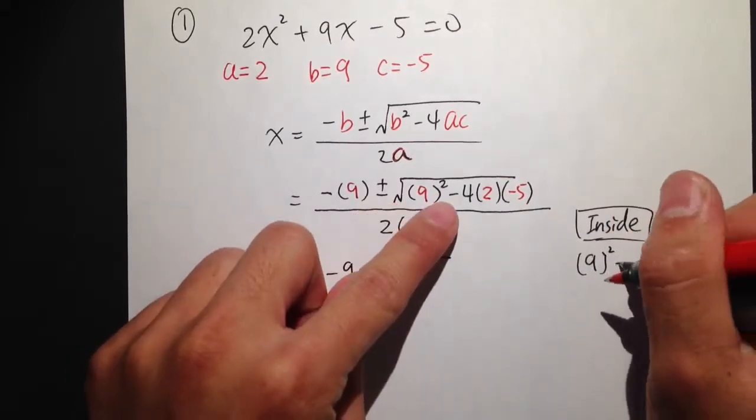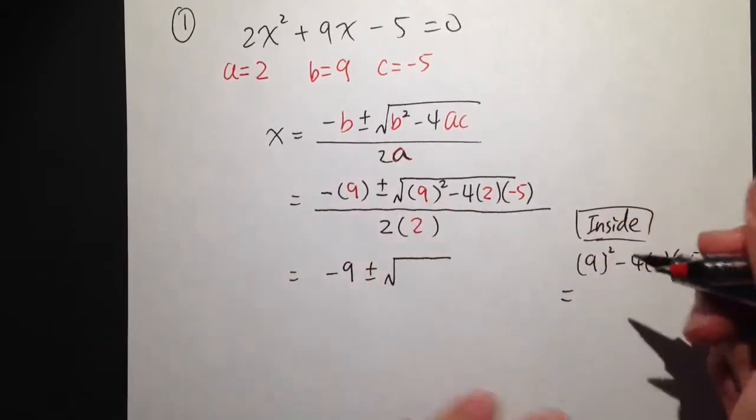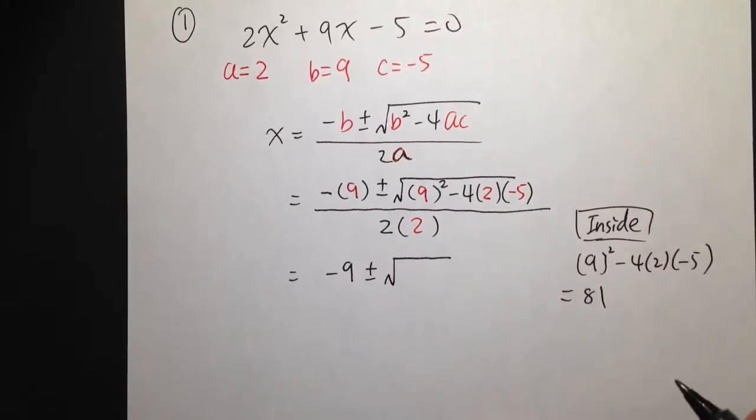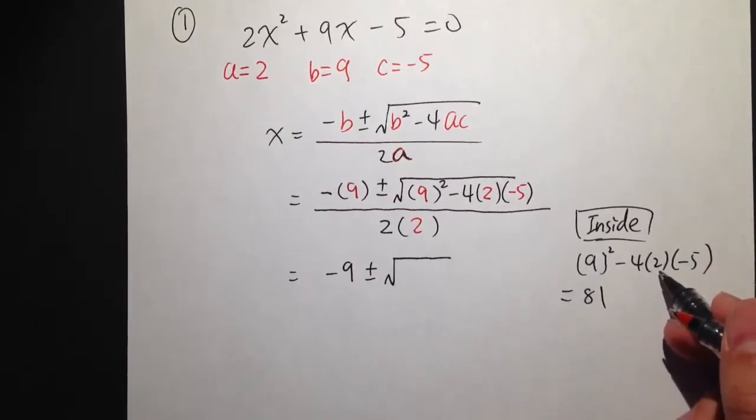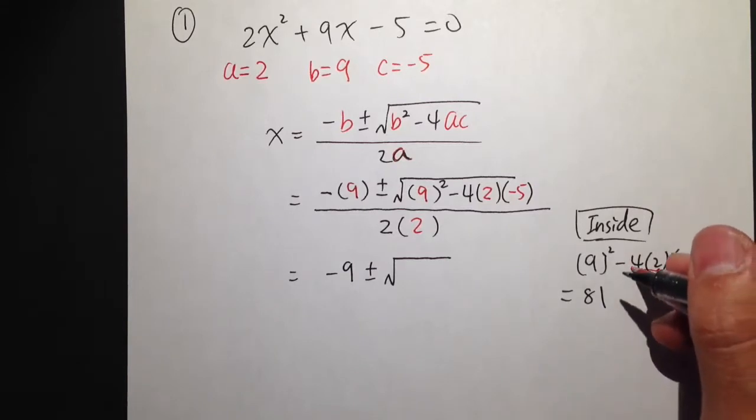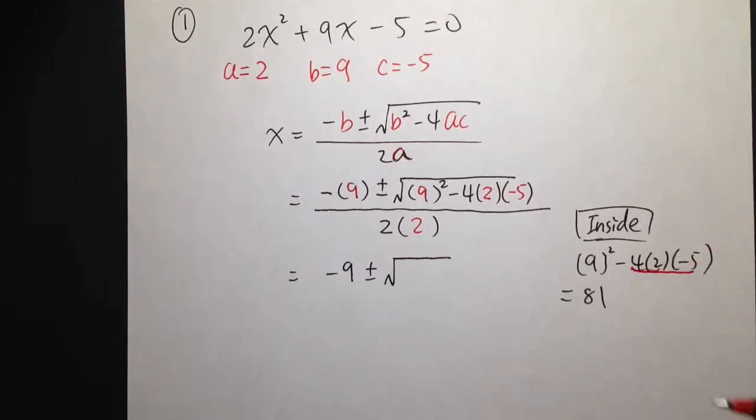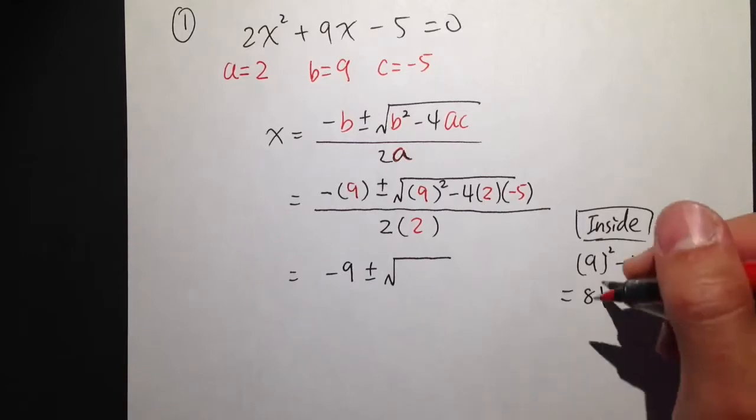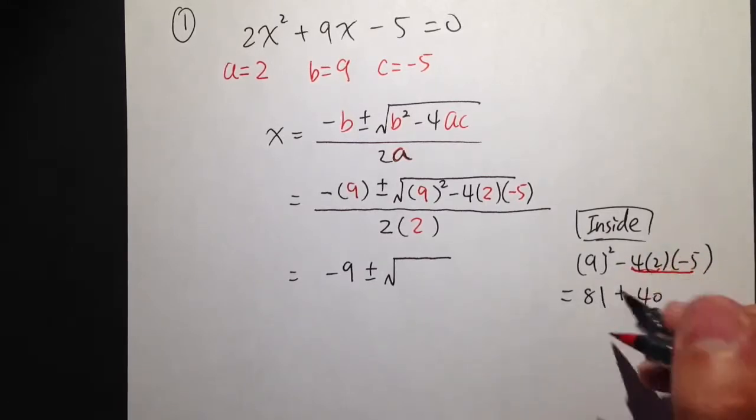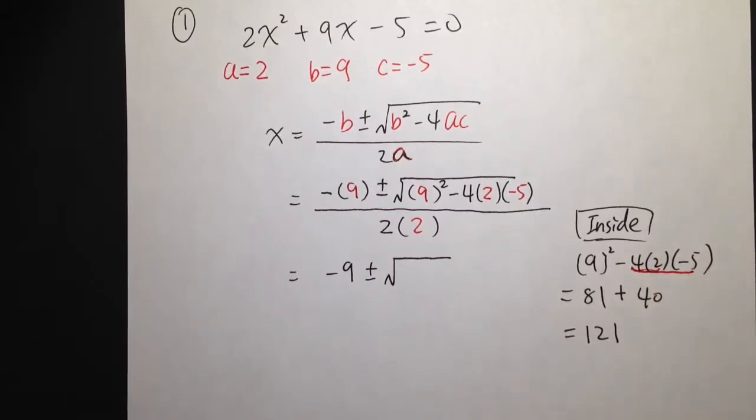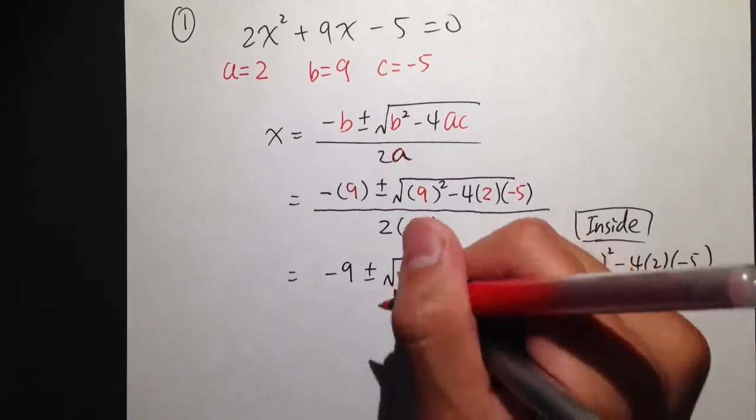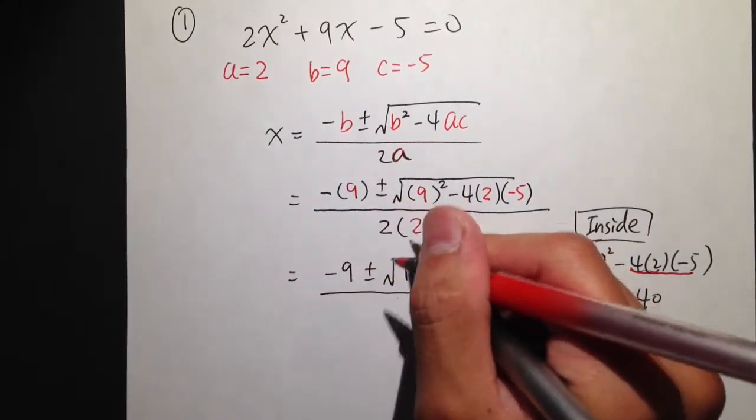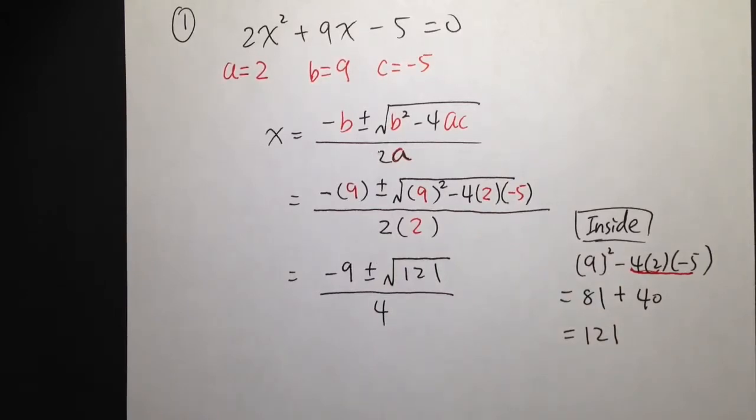9 squared, minus 4 times 2 times negative 5. This equals to 9 squared, which is 81. And then to do this multiplication here, this is how I like to do it. We do 4 times 2, which is 8. And then you do 8 times the number 5, which is 40. So I worked out a number, which is 40. And then negative times negative, it's positive. So you add. We have 81 plus 40, and that's 121. And this goes inside of the square root, 121. All this on the top, over 2 times 2, which is 4.